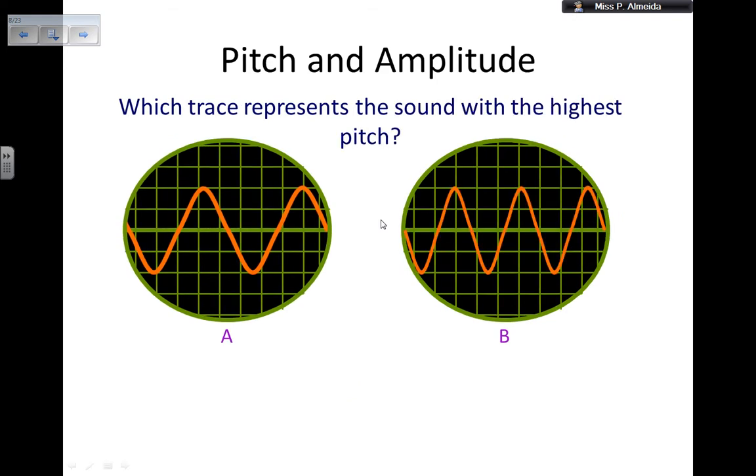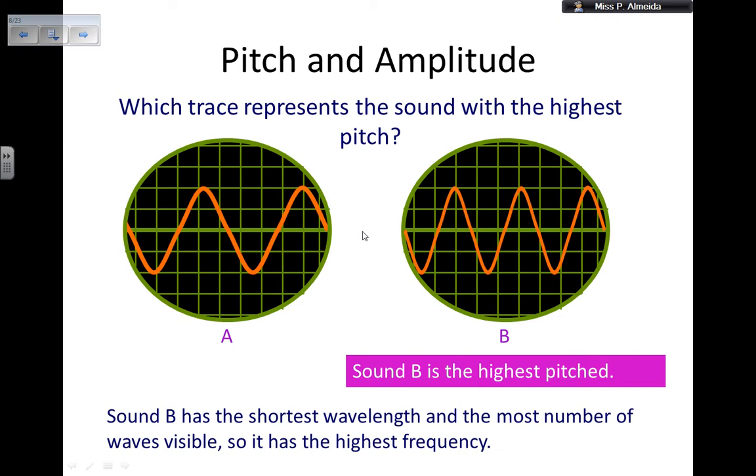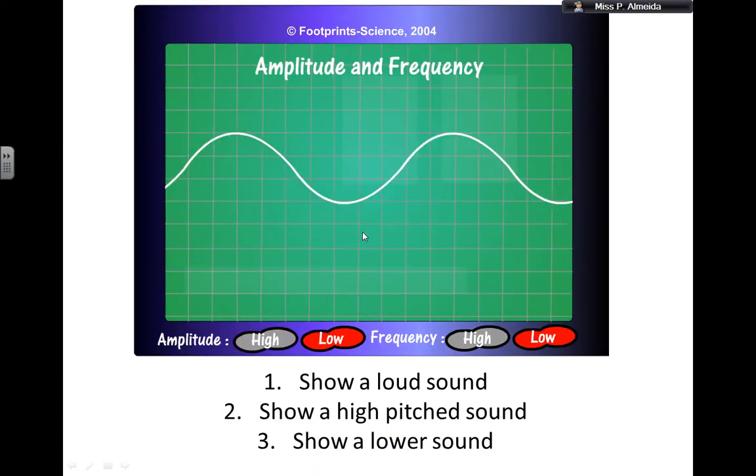In this one, which trace represents the sound with the highest pitch? You can have low pitch, which is like a deep sound, or high pitch, which is a high pitch sound. Pitch has to do with frequency. The higher the pitch, the higher the frequency, the more waves you see into the same amount of time. Trace A and B have the same amplitude, so they are equally loud. However, trace B has a higher frequency. You have more waves showing in the signal, so more waves passing through you each second. Trace B has the highest pitch. Sound B has the shortest wavelength and the most number of waves visible, so it has the highest frequency. This is how you can justify your answers.